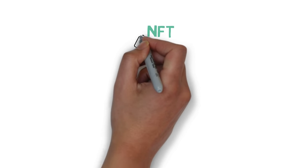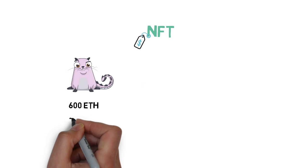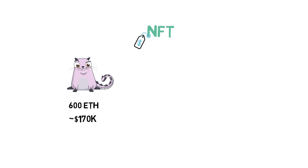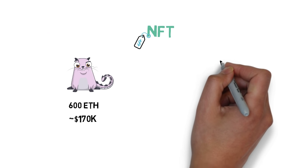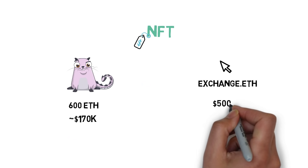Some NFTs can be extremely costly. The most expensive CryptoKitty, Dragon, was sold for 600 ETH at the end of 2017, worth around $170,000. Scarce domain names such as exchange.eth can be worth upwards of $500,000.